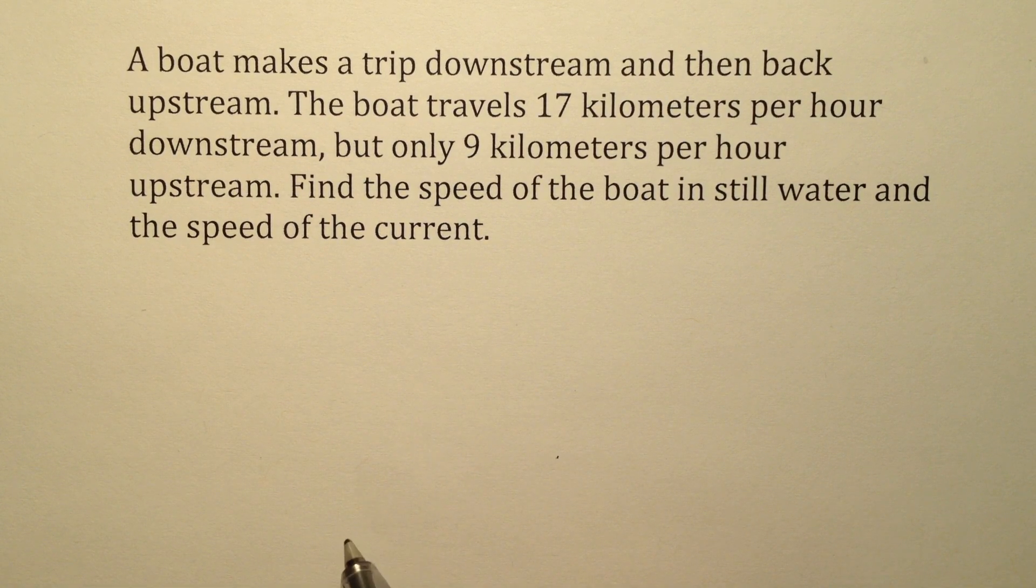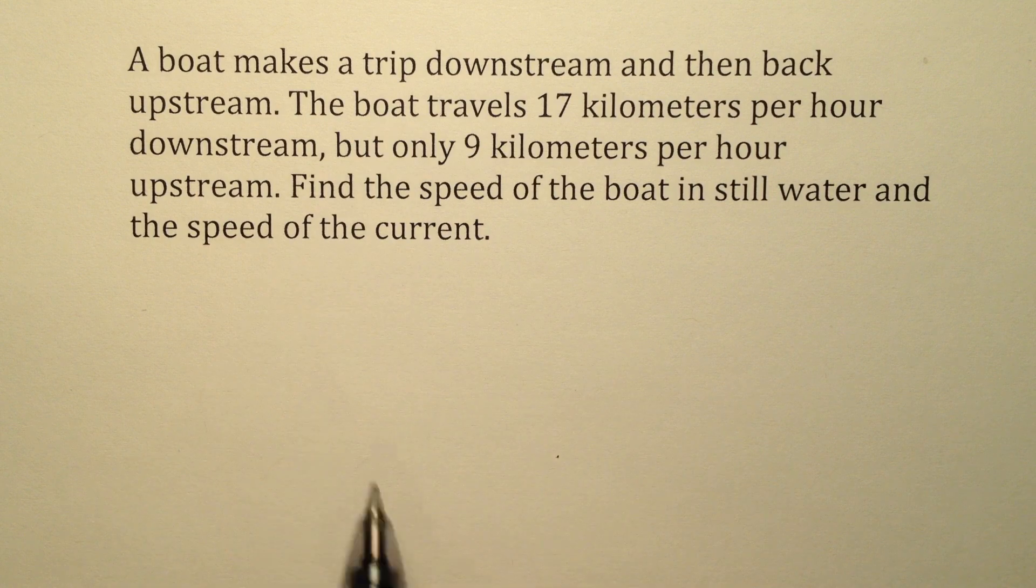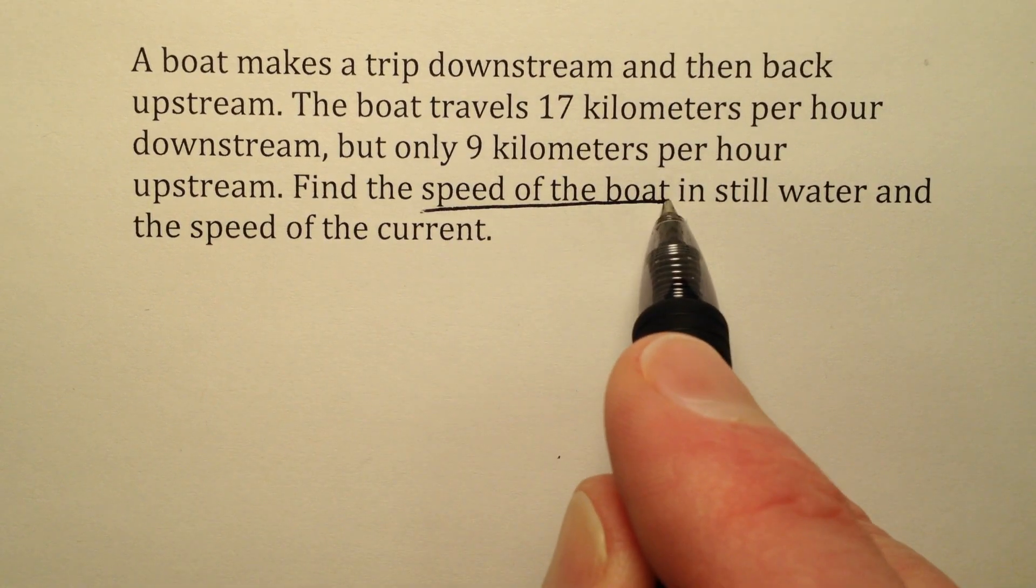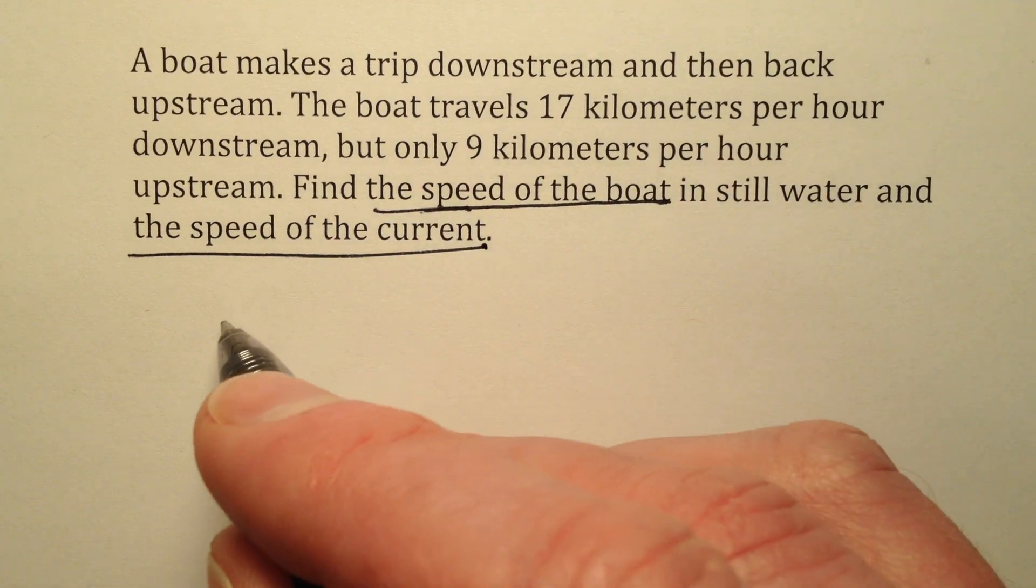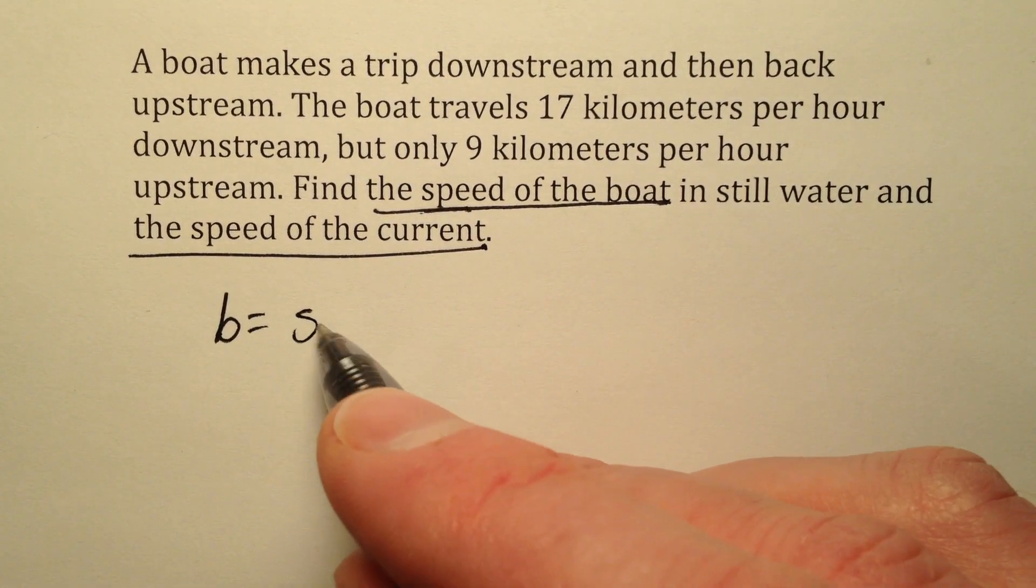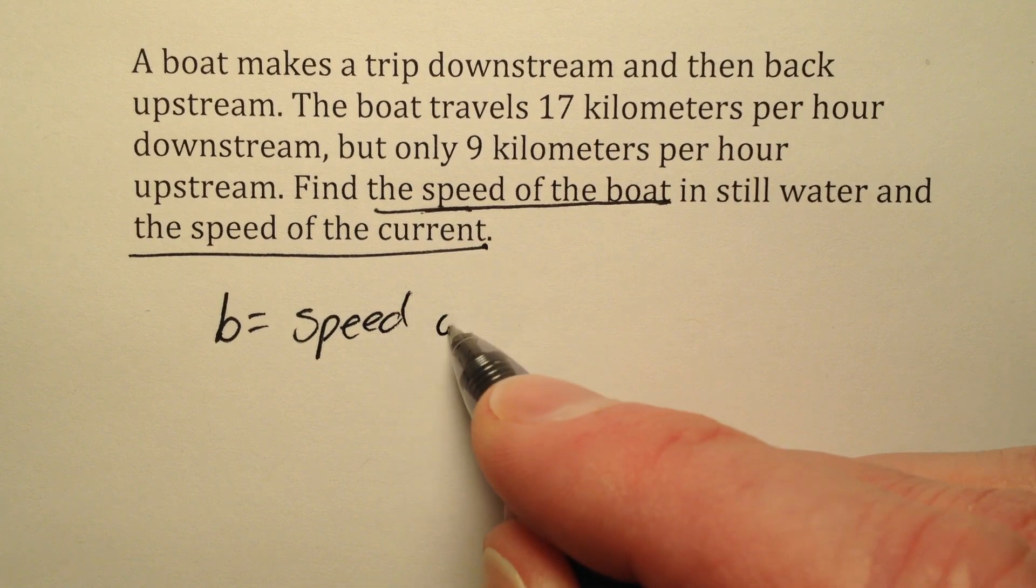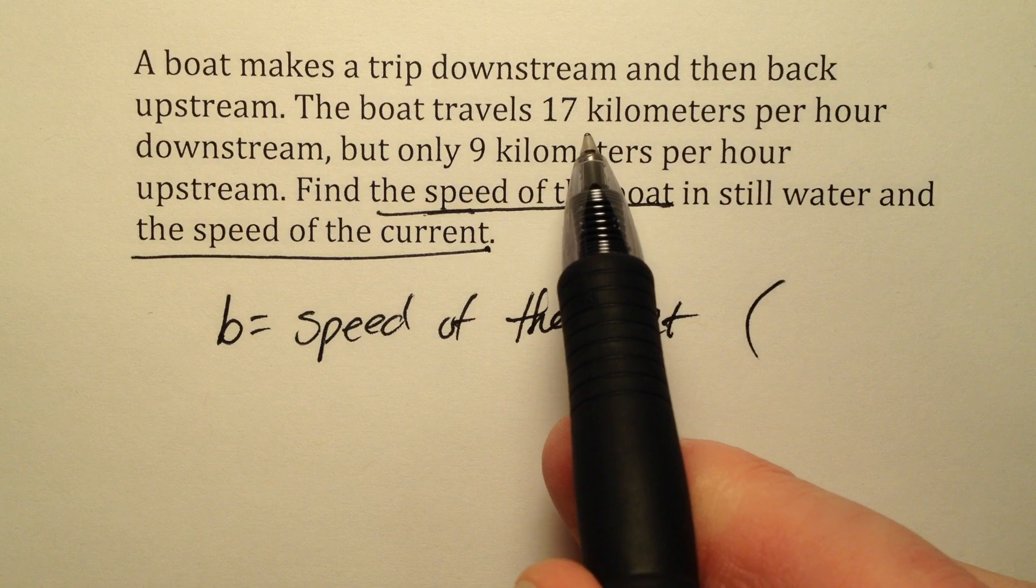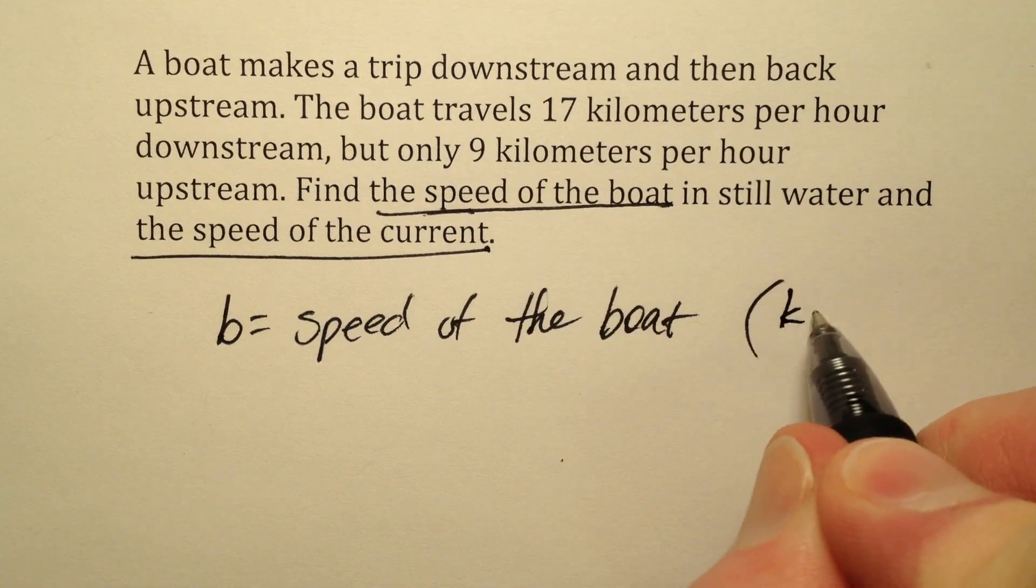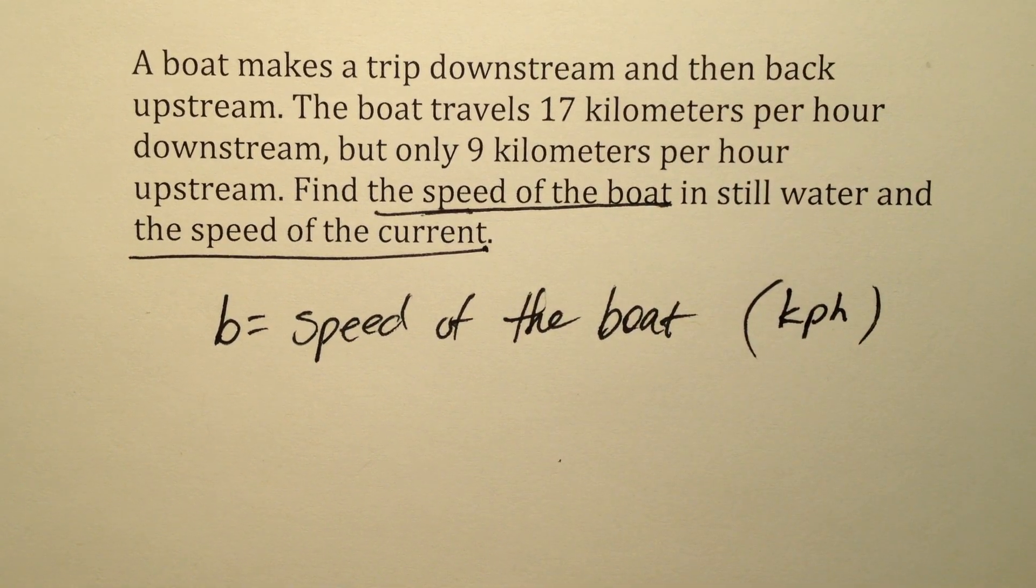Let's go ahead and define our variables and then we'll describe the situation we have here. I'm going to say b equals the speed of the boat. And that looks like it's going to be measured in kilometers per hour, so I can say kph for kilometers per hour.